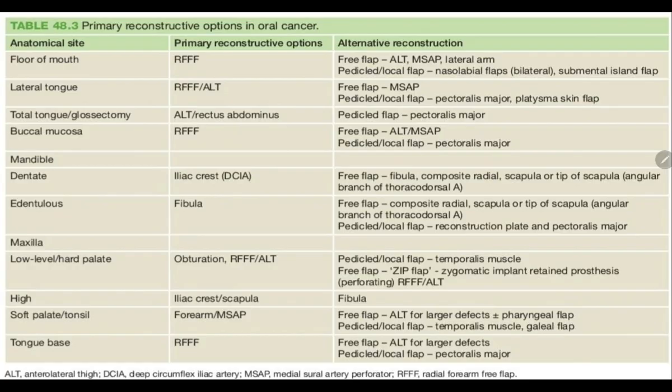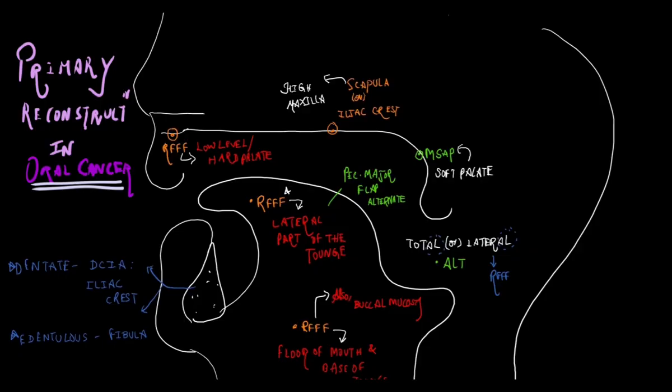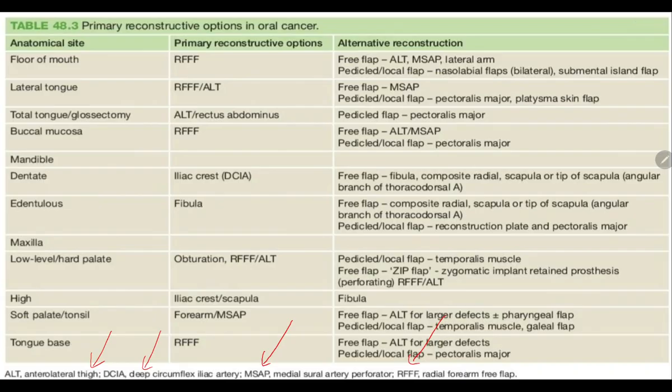Next, we will move on to the primary reconstruction options. This is the basic classification which is given in Bailey and Lau. We will now remember in a more simpler way. I have constructed this diagram to easily remember only the primary reconstruction in oral cancer. Before going into that diagram per se, let us know the abbreviation. ALT is anterolateral thigh. DCIA is deep circumflex iliac artery. MSAP is middle sural artery perforator and RFFF is radial forearm free flap. Having this in mind, let us go to next picture.